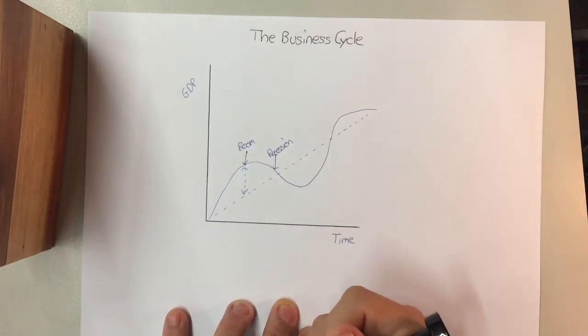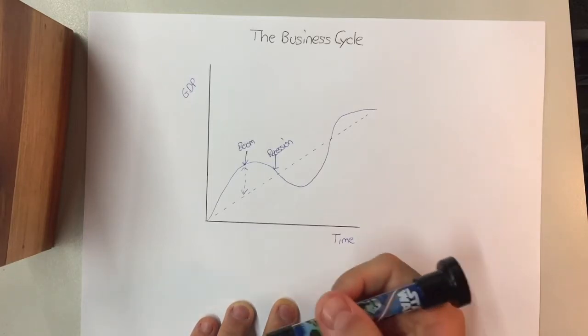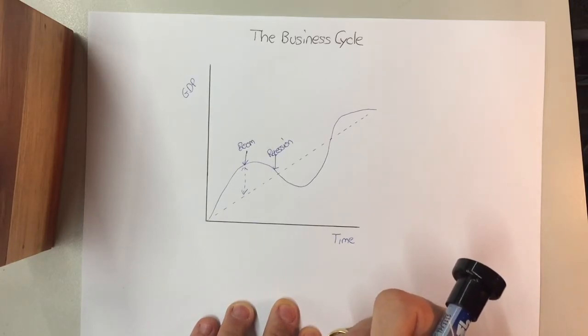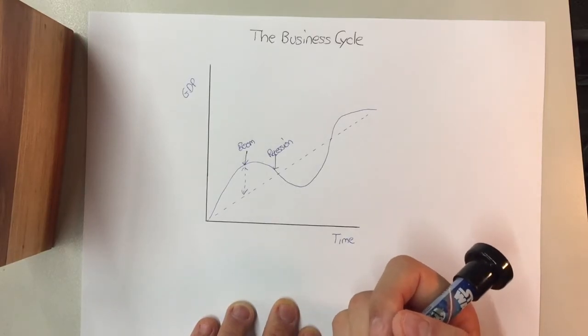The key thing to remember is that an official recession is only recorded when we have two consecutive quarters of negative GDP growth. So a quarter is every three months, so when the records come out saying we've had negative growth for two quarters, we're officially in a recession.